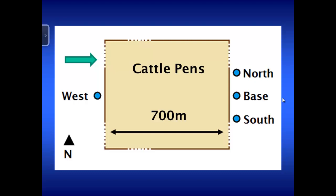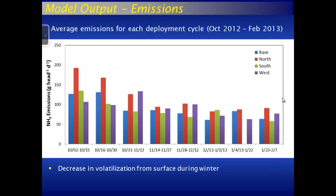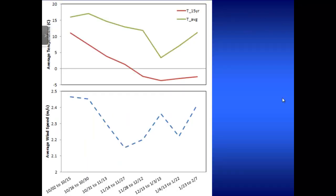Here's a schematic of the feedlot with the prevailing wind shown. These are our three main stations: north, base, and south. This is model output — I put all the variables into the model and get a time series of emissions, each representing an average for a two-week period. You can see it starts in October and ends in early February, with a fairly distinguishable decrease over the winter, mostly due to the decrease in temperature.